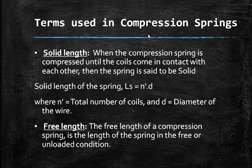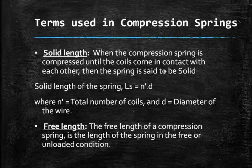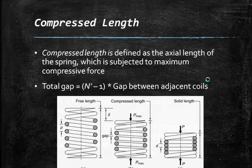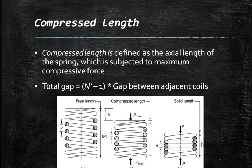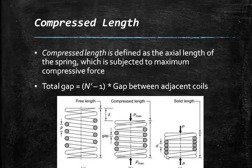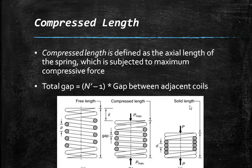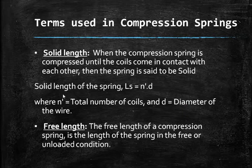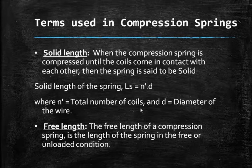The terminology for compression springs begins with solid length. When a compression spring is compressed until the coils come in contact with each other, it is said to be solid. The solid length is calculated by multiplying the wire diameter (d) by the total number of coils (n'): Solid Length = n' × d. For example, seven coils multiplied by the wire diameter gives the solid length.